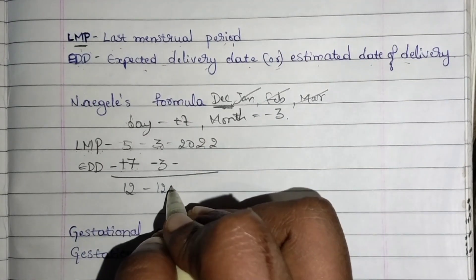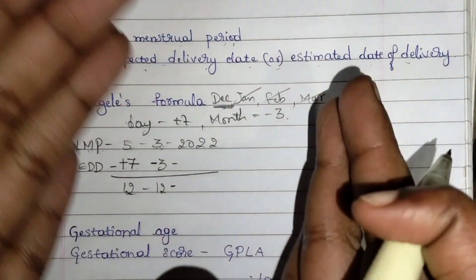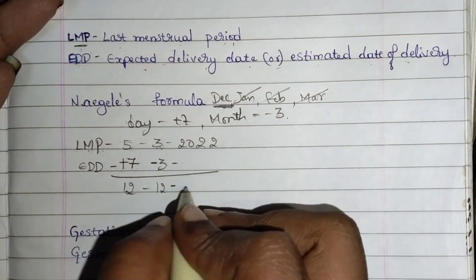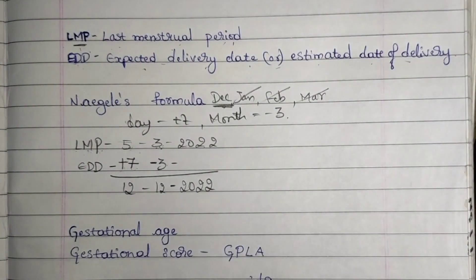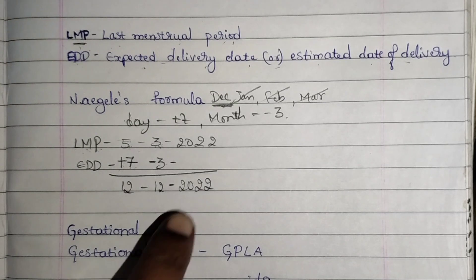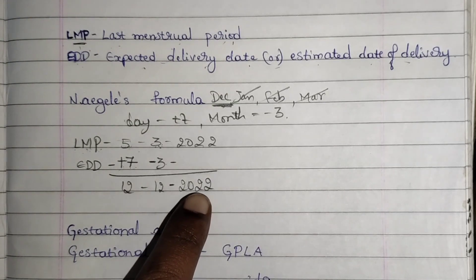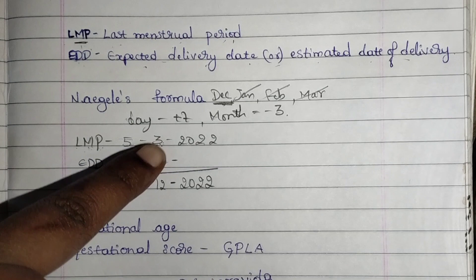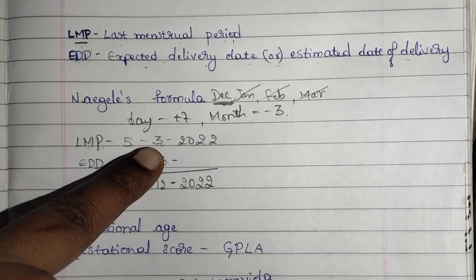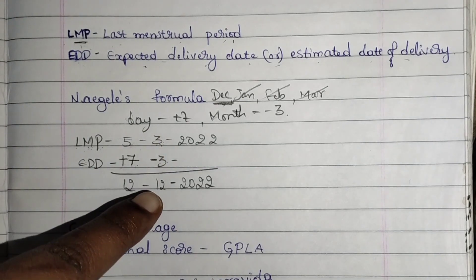Going backwards in month does not mean you go back to the previous year. You still write 2022. If a woman is pregnant today, she will give birth after 9 months — she can't give birth before that. So you write 2022 only. If she is pregnant in the third month, she will get her delivery in December of the same year.